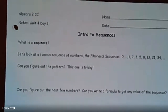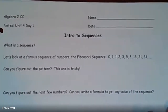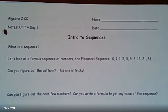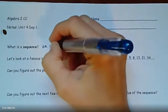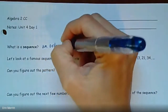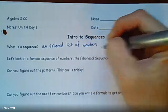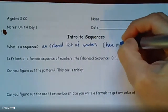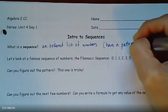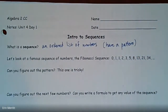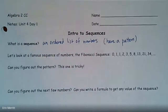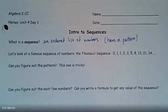I'm going to zoom in just a touch so hopefully you can see everything. All right. So intro to sequences. The first thing that we want to understand is, well, what even is a sequence? So all a sequence is, is an ordered list of numbers, which typically then have a pattern. And those are the ones that we're really going to be looking at — how do we find the pattern? How do we figure out what is the 10th number in the sequence or the 50th number and so on?